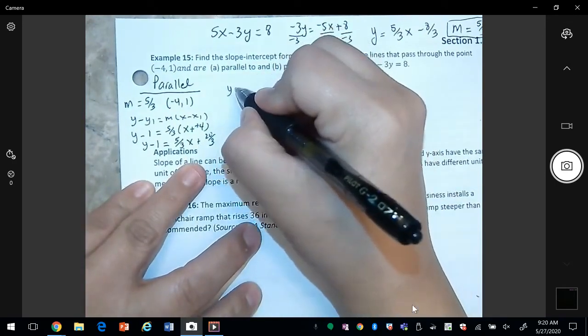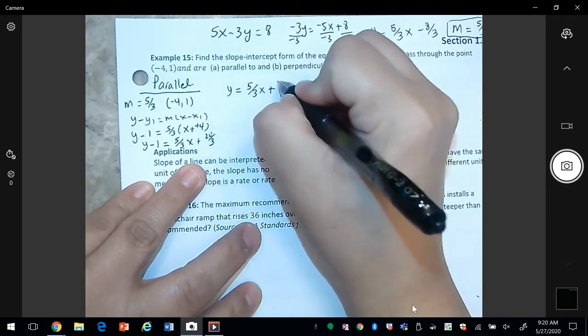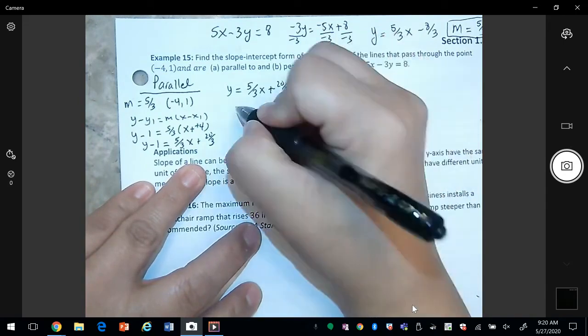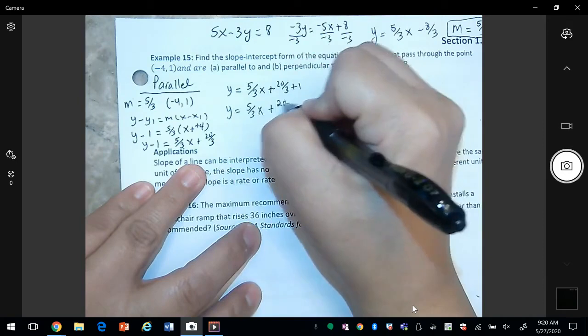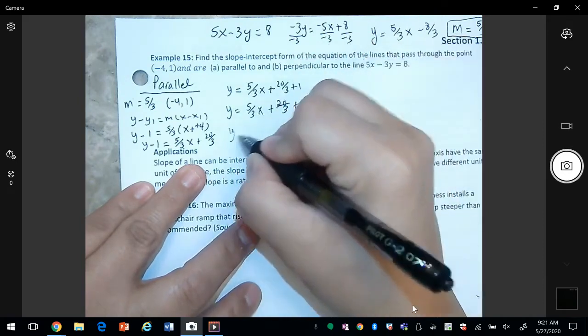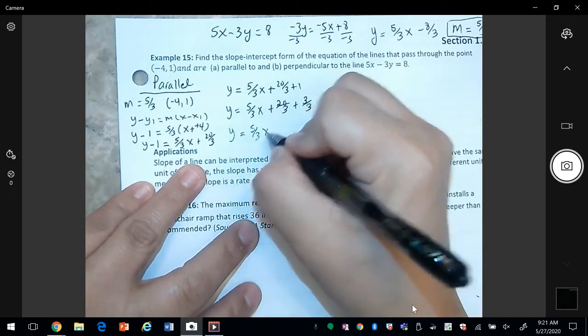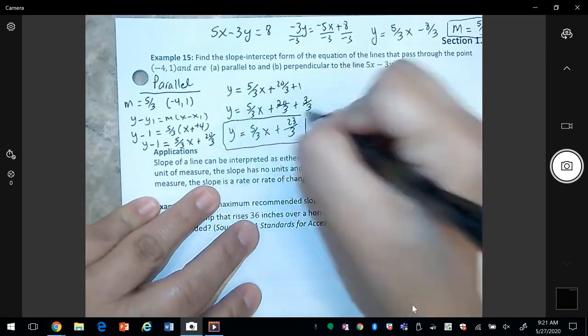And so if we simplify some more, let's add one on both sides, and so we need a common denominator. So this one I can rewrite as three over three. Twenty plus three is twenty three, and so this would be my equation.